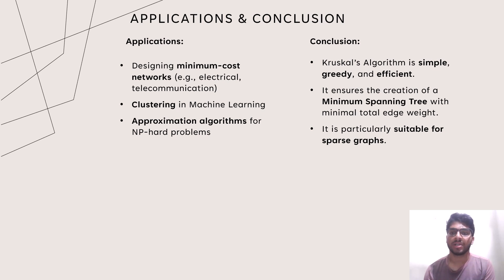And the conclusion. Kruskal's algorithm is simple, greedy and efficient. It ensures the creation of a minimum spanning tree with minimal total edge weight. It is particularly suitable for sparse graphs.